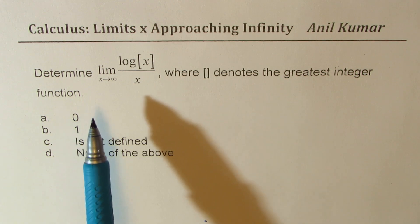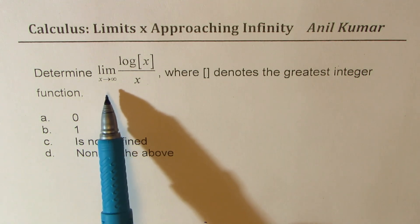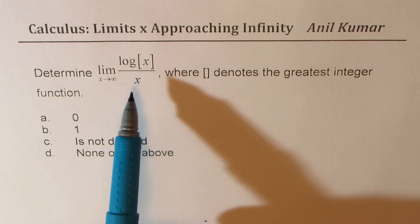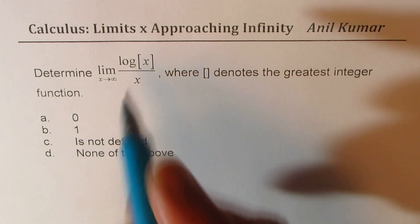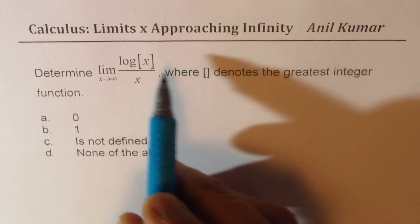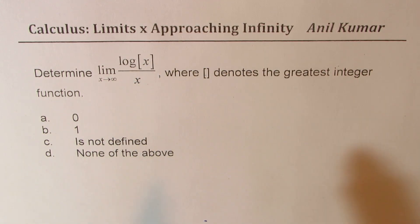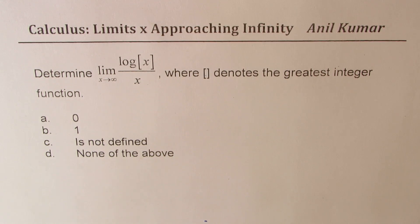We need to determine limit as x approaches infinity for log of greatest integer x divided by x. This symbol here means greatest integer. We will talk about this also and then we will answer the question. Four choices are given to us. How do we solve such a question?